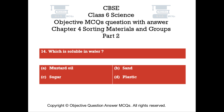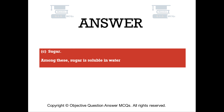Question number 14. Which is soluble in water? Option A: Mustard Oil. Option B: Sand. Option C: Sugar. Option D: Plastic. The right answer is Option C — Sugar. Among these, sugar is soluble in water.